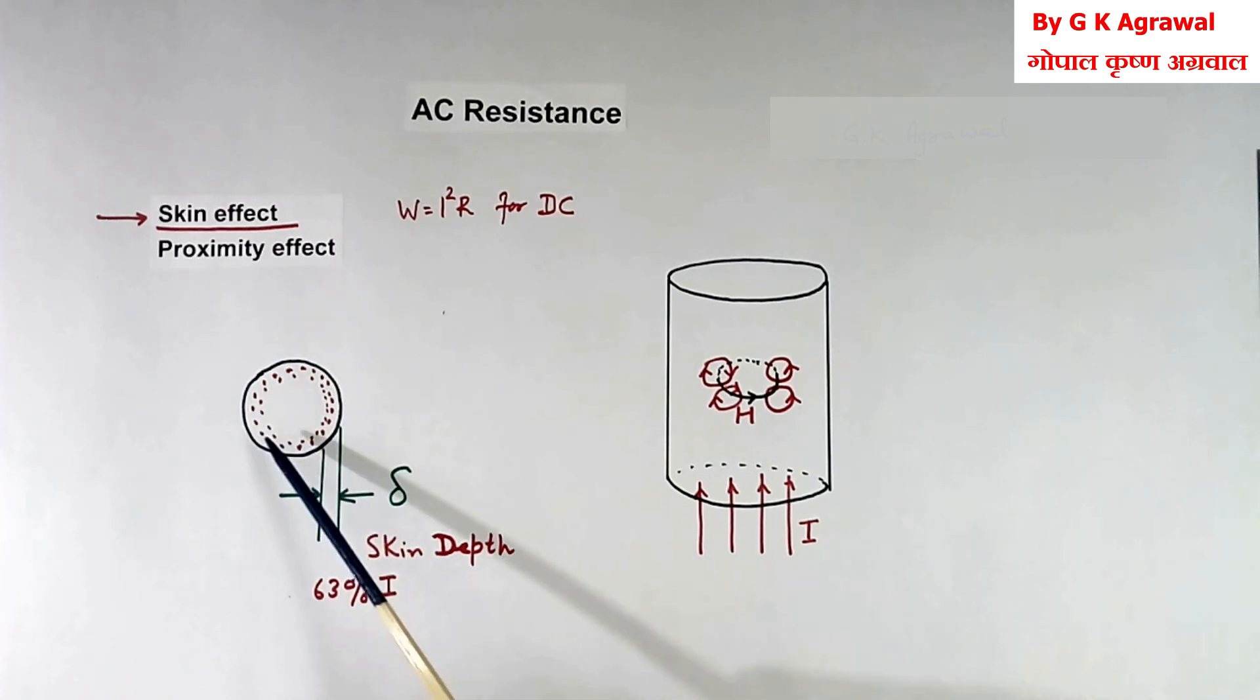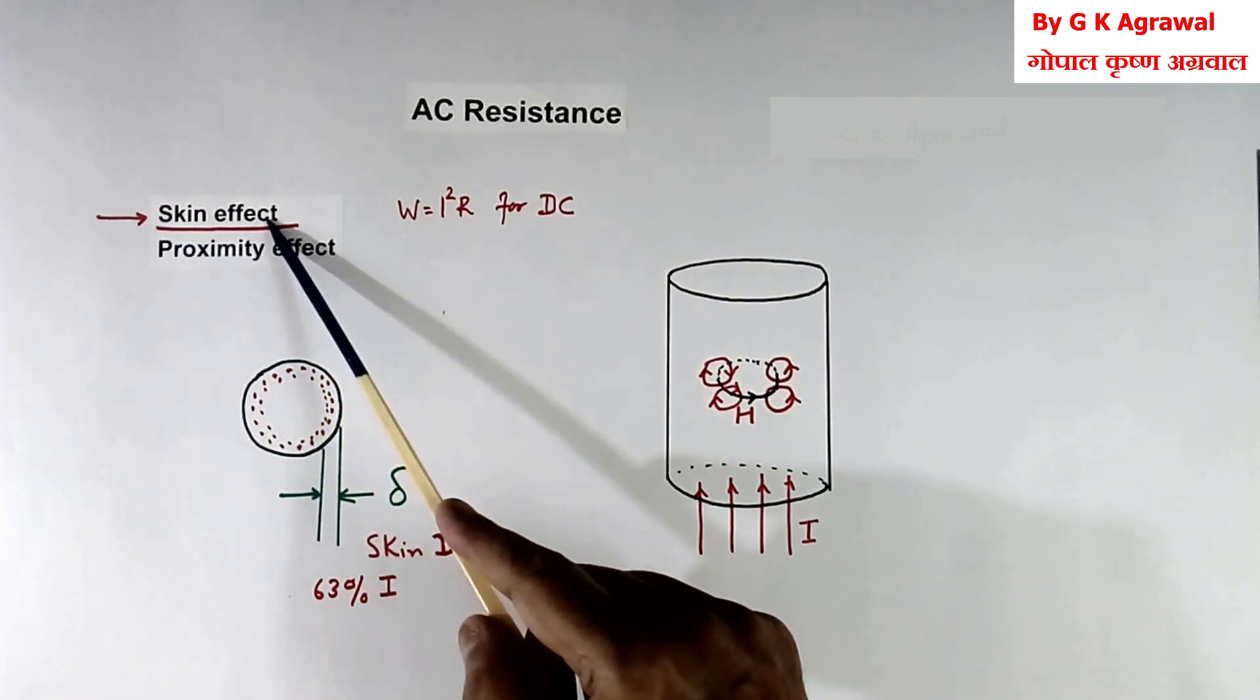And red color is current flowing. We are seeing in the middle there is no current. And at side around, more current is flowing because of skin effect.